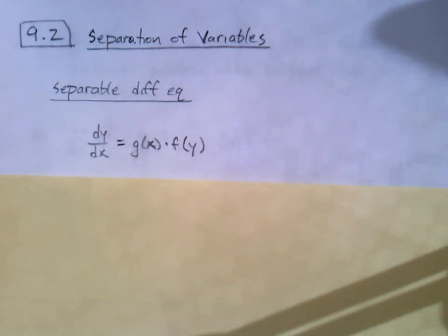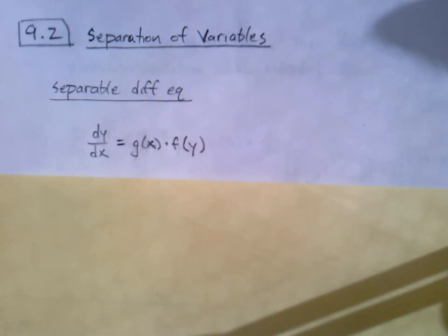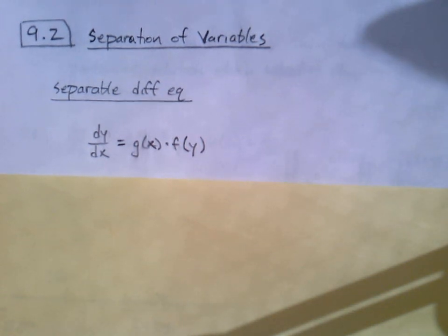Alright, 9.2 is called separation of variables. What we're going to look at in 9.2 and 9.3 are differential equations that take on particular forms. If it takes on either one of those two forms, then we've got a method to solve these things.